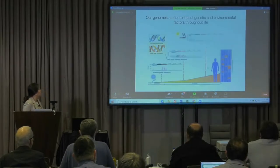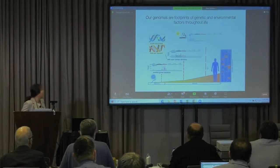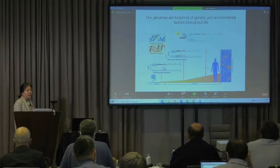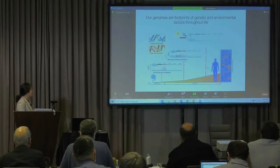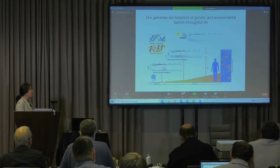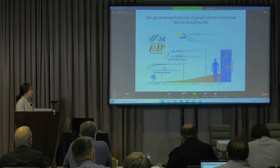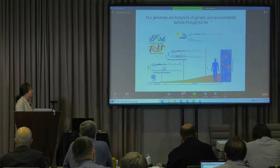Our genomes are footprints of genetic and environmental factors throughout our lives. Starting from the zygote with inherited mutations from our parents, our body accumulates somatic mutations throughout life. If we examine many mutations in our cells, we can understand what kind of mechanisms or processes have shaped those mutations.